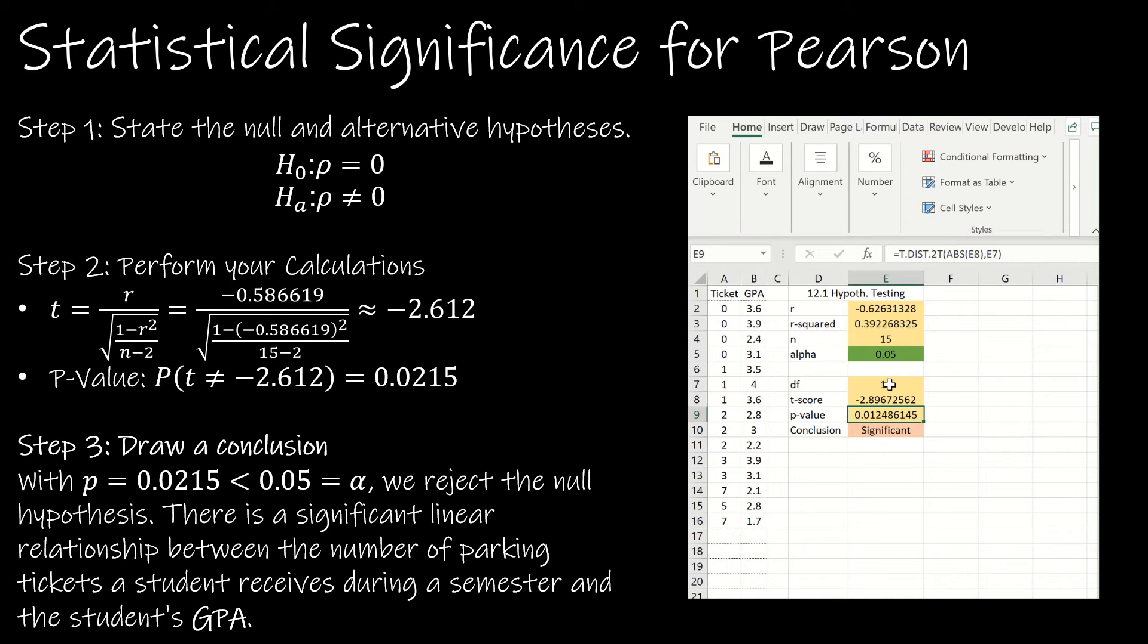P-value, again, we're going to use T.DIST.2T, and so that I don't have to worry about a negative T-score. Notice here I have a negative T-score and Excel doesn't love that, so I'm just going to use the absolute value of whatever I get for my T-score, and then comma E7, which is the degrees of freedom, and that gives me my P-value.